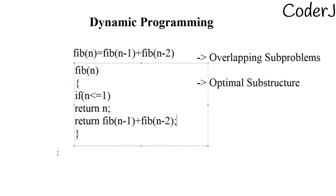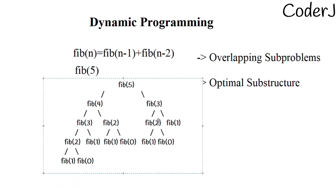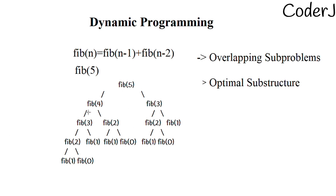Now, how does this help us understand dynamic programming? Suppose using only recursion I try to solve fib(5). Let me use an image to show the kind of structure it becomes. For fib(5), you need to calculate fib(4) and fib(3), and in turn for fib(4) you need fib(3) and fib(2) — following the formula.